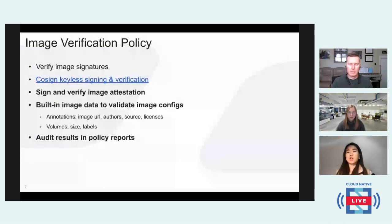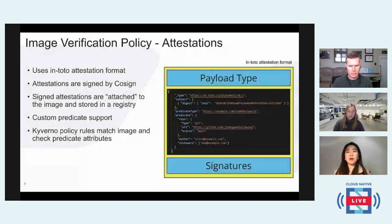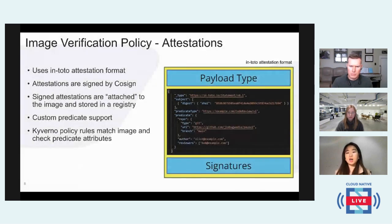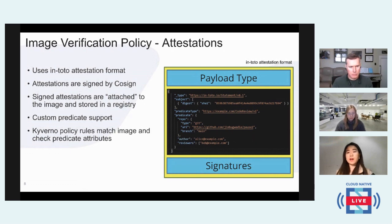Before we jump to the demo, I want to give a little background about attestations. We use a tool called in-toto, which is a Linux Foundation project that has a standard attestation format. In the attestation statement, you can either customize the payload or define some of the built-in payload and later use that in Kyverno policy to validate configurations. The attestation is something you can sign and attach to the image and store it in the registry. Kyverno, if you have such policies configured, will look up from that registry and get all the attestation statements.